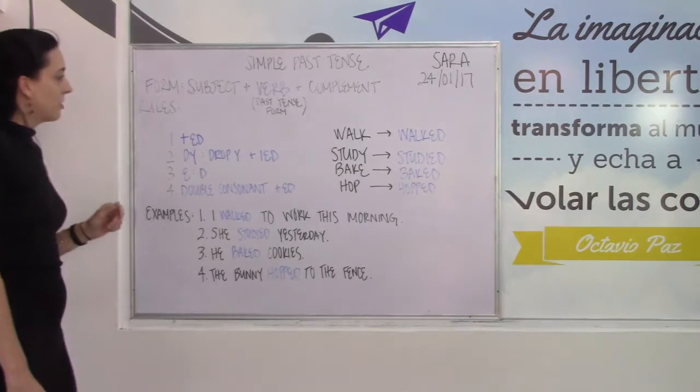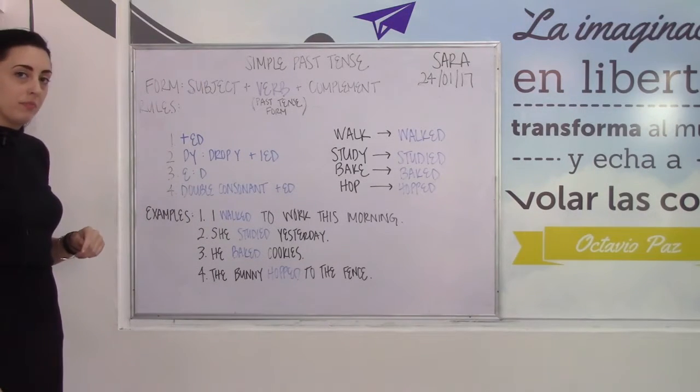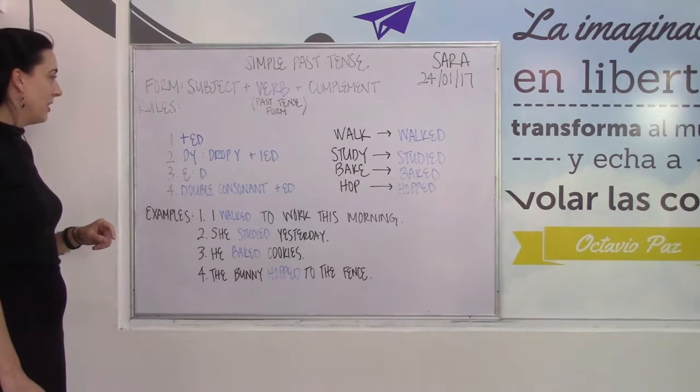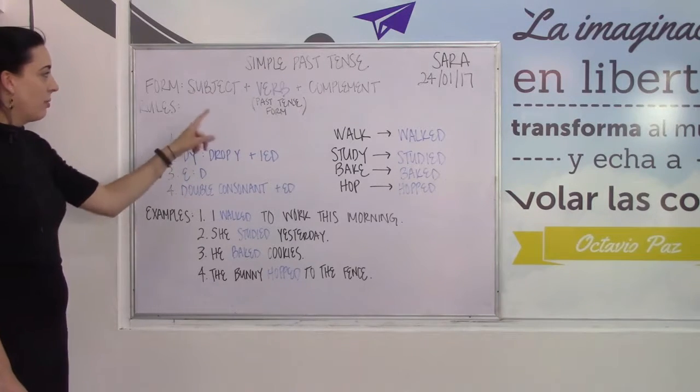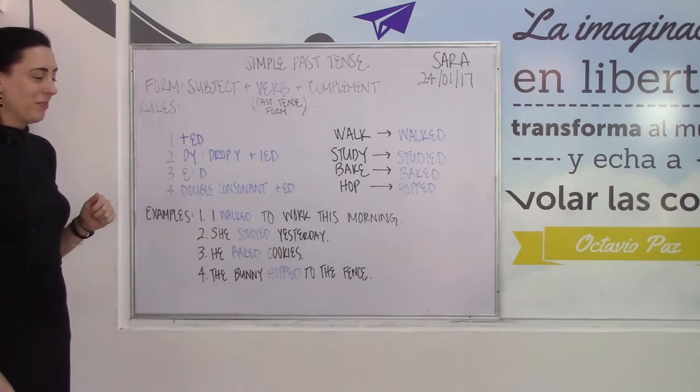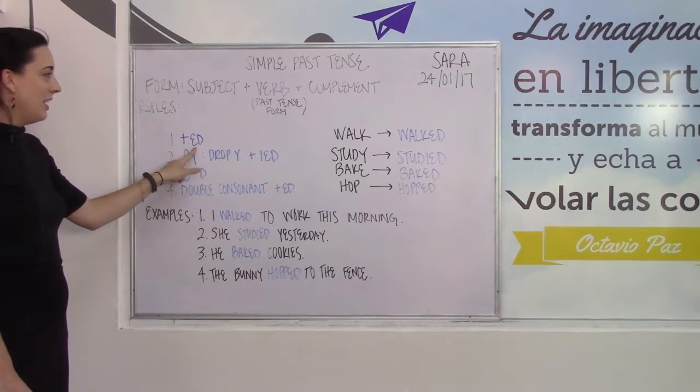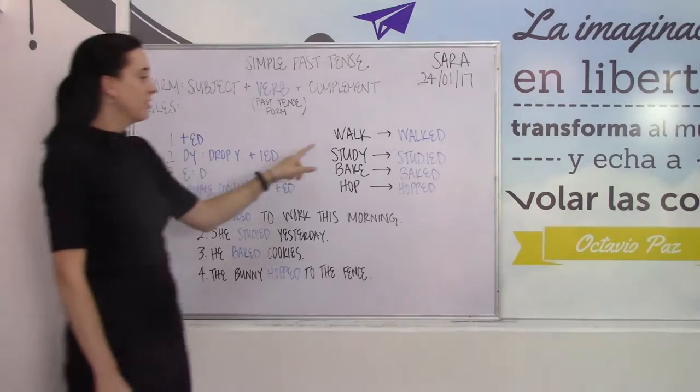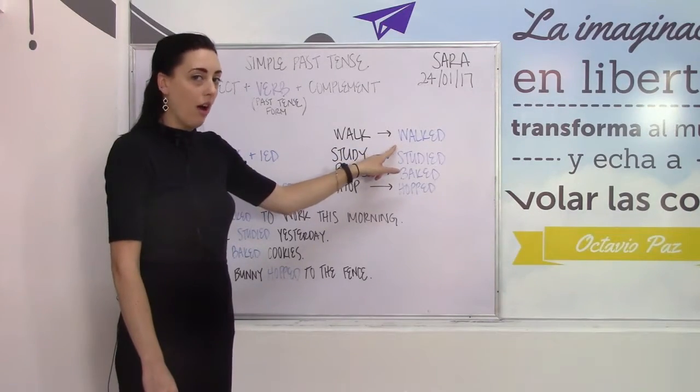We have some rules that apply when using this form. The first very basic rule for making our past tense form is to add ED to the verb. So walk gets turned into walked.